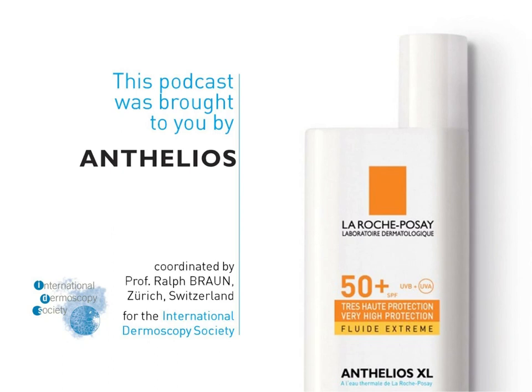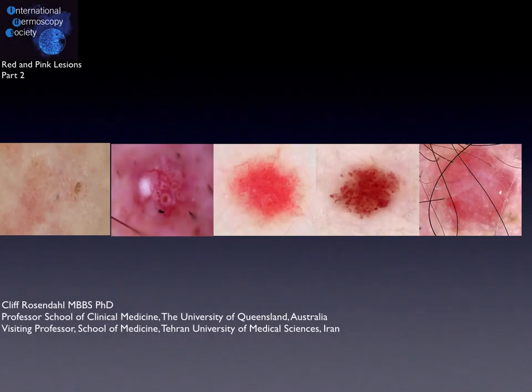Hello, this is Cliff Rosendale again with red and pink lesions part 2. In this section we will be looking at red and pink lesions which contain structures pigmented by melanin.